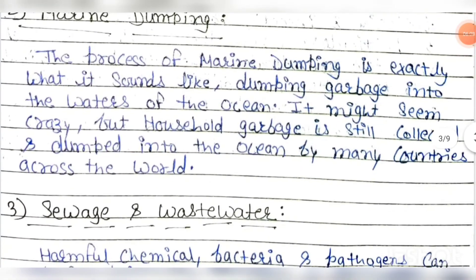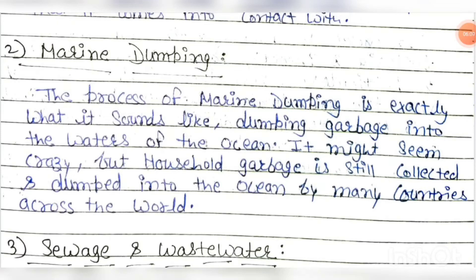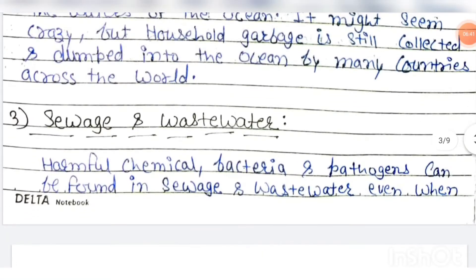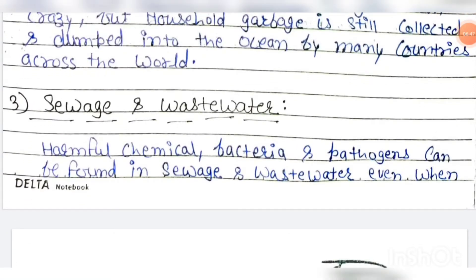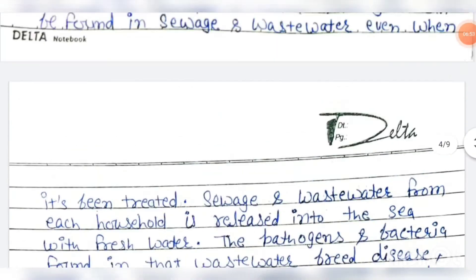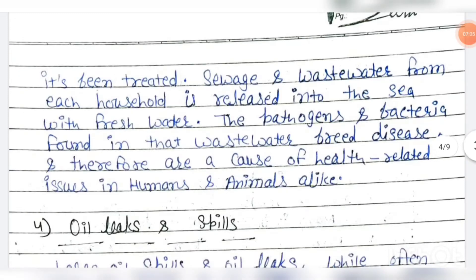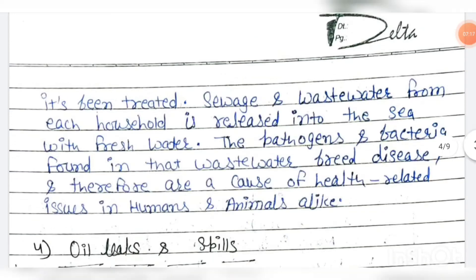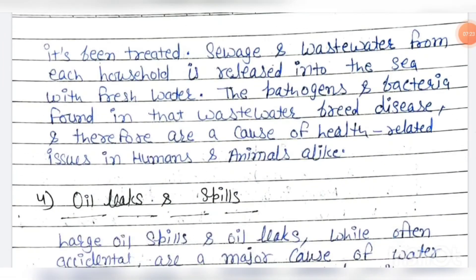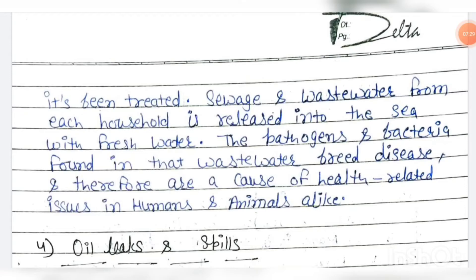The second cause is marine dumping. Marine dumping is the process of dumping waste into the sea or waterways. Sewage and wastewater from each household is released into the sea with fresh water. The pathogens and bacteria found in this wastewater breed disease and therefore are a cause of health-related issues in humans and animals. Whatever sewage is released contains pathogens and chemicals that, after release, cause harm to both human beings and animals.